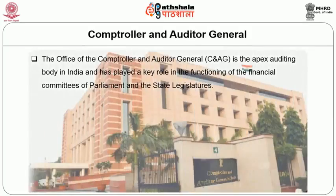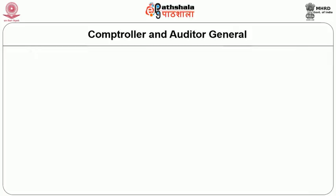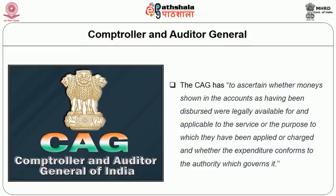We are now going to discuss the Comptroller and Auditor General of India. The Office of the Comptroller and Auditor General is the apex auditing body in India and has played a key role in the functioning of the financial committees of Parliament and the state legislatures. The CAG has to ascertain whether monies shown in the accounts as having been disbursed were legally available for and applicable to the service or purpose to which they have been applied or charged, and whether the expenditure conforms to the authority which governs it.